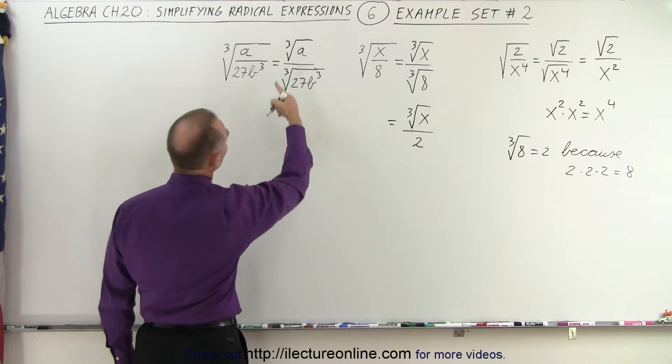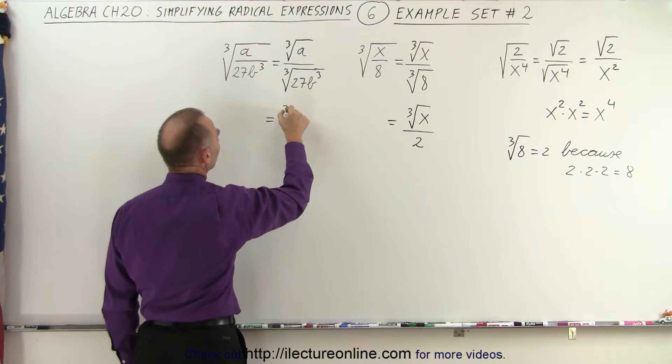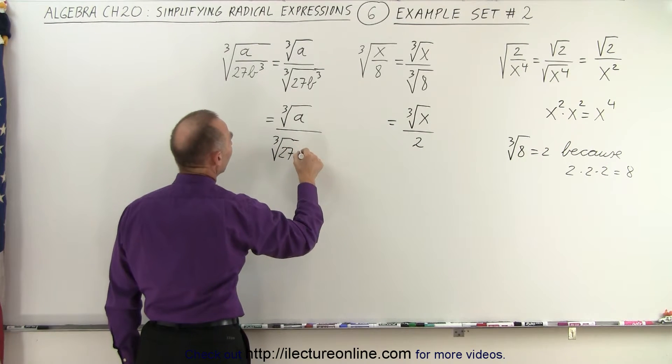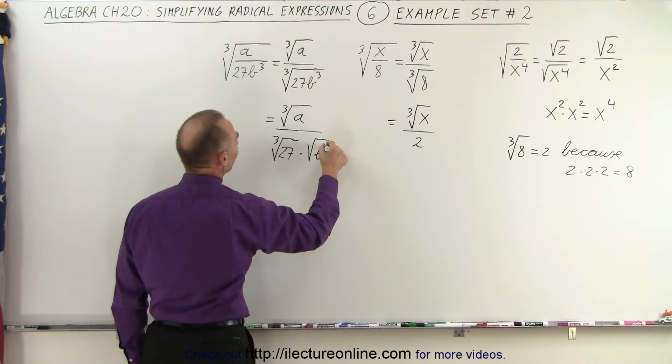Over here, we can see that the numerator again cannot be changed, that's the cube root of a, but in the denominator, this can be written as the cube root of 27 times the cube root of b cubed.